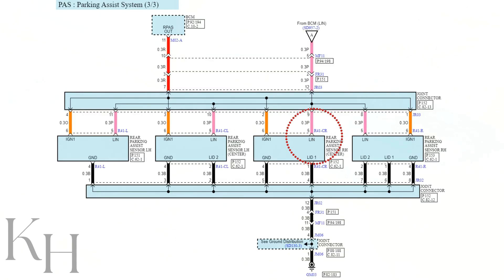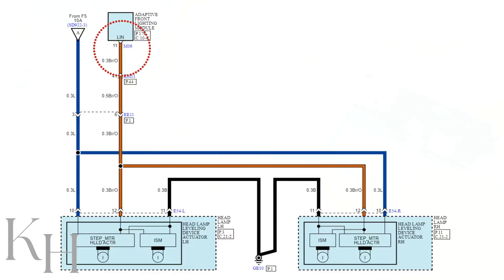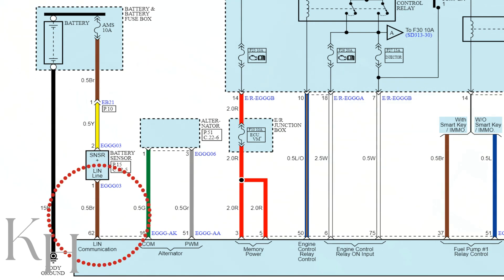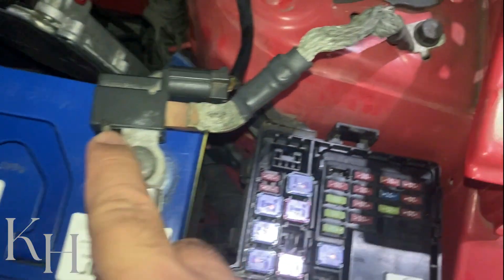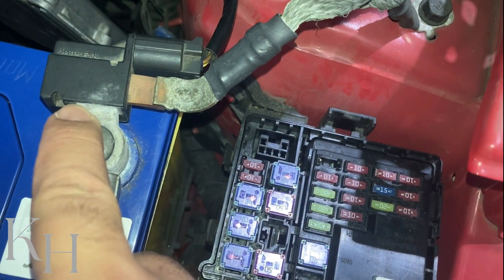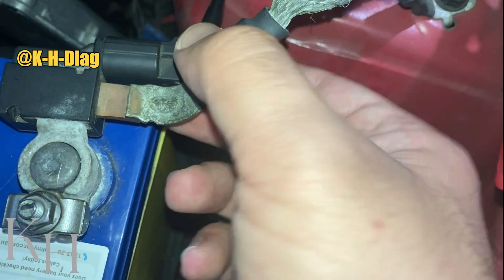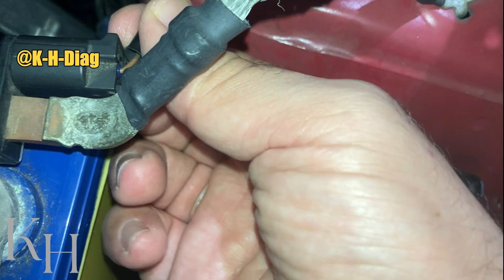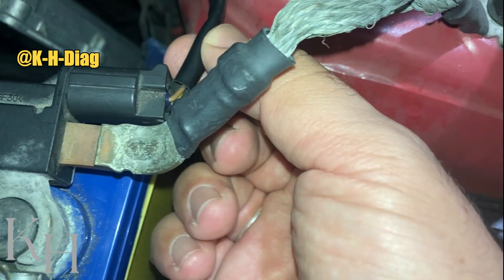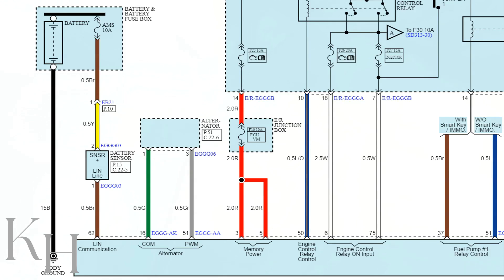LIN bus can be used on different systems. For example, on one car LIN bus is used on the rear parking assist system, on another it's used on the adaptive front lighting system, and on this car I'm diagnosing right now, LIN bus is used for the battery sensor. This battery sensor communicates with the engine control module to share battery information through the LIN bus wiring.